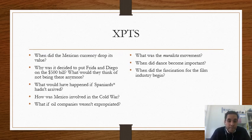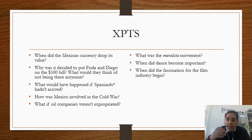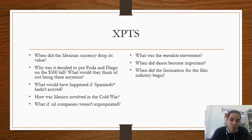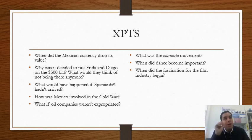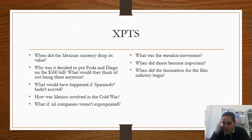More questions: When did the Mexican currency drop its value? Why was it decided to put Frida Kahlo on the 500 peso bill, and what would she think of not being there anymore? That's a hypothetical — imagination is welcome, though it's not strictly history. What would have happened if the Spaniards hadn't arrived? How was Mexico involved in the Cold War? What if the oil companies weren't expropriated? What was the Muralist movement? When did dance become important in Mexico? And when did the fascination for folklore begin?